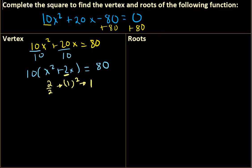So now I have to add 1 inside, and I have to add 1 over here. But this 1 has to be multiplied by 10 because of the greatest common factor. So we have 10 times x squared plus 2x plus 1 equals 80 plus 1 times 10, which is 10. So we get 90.